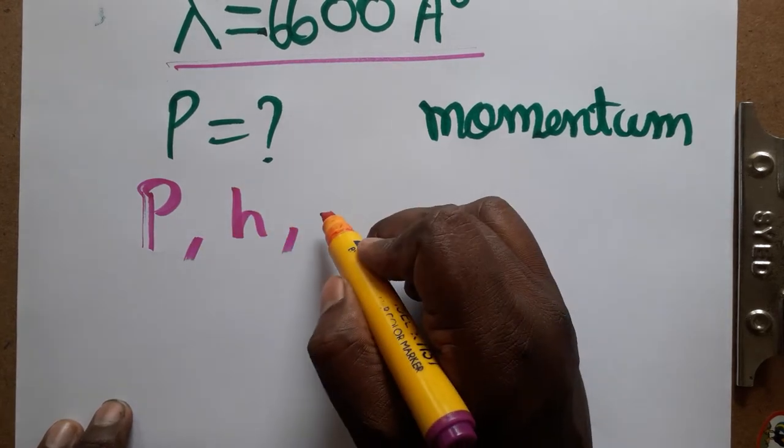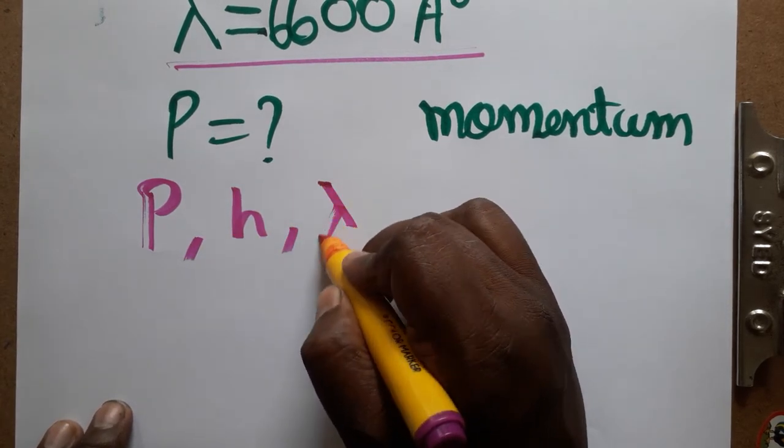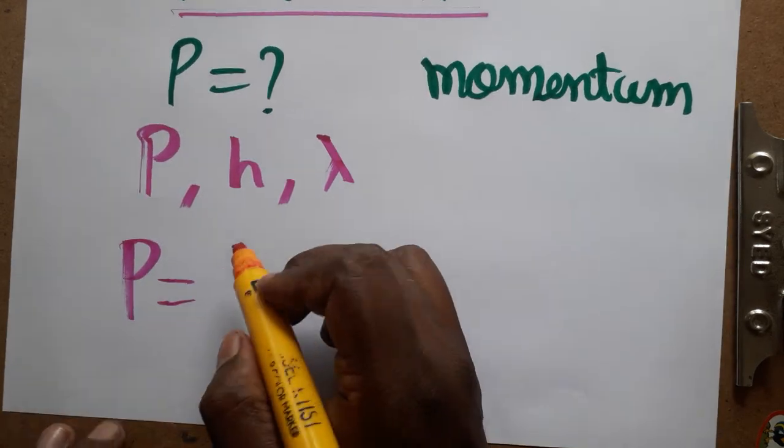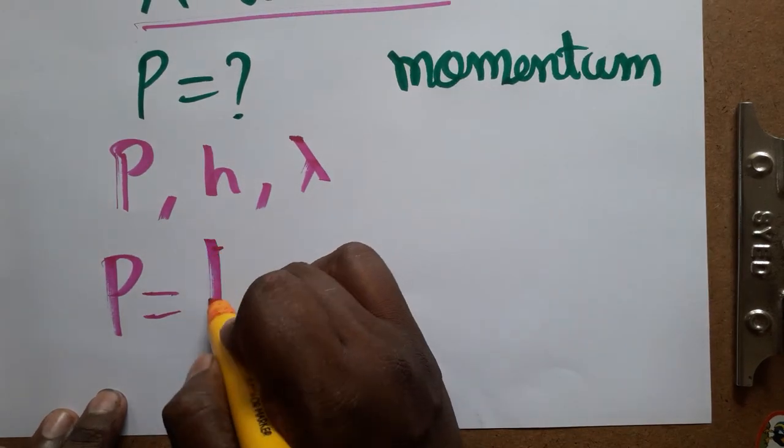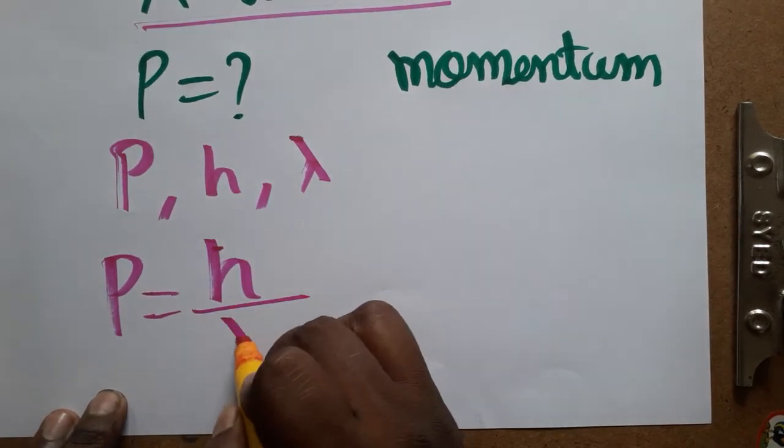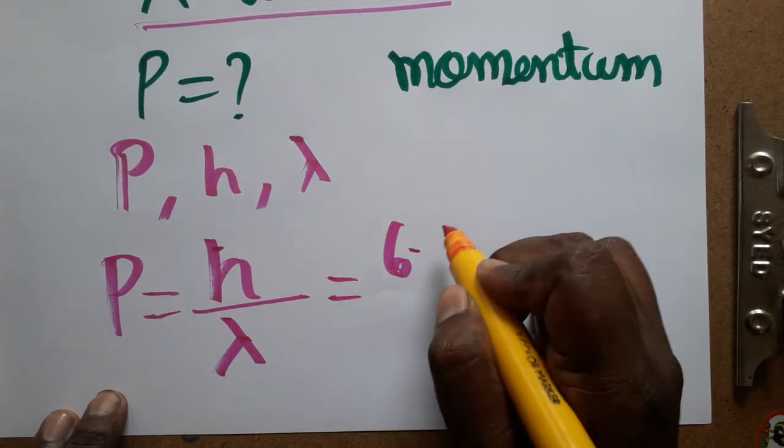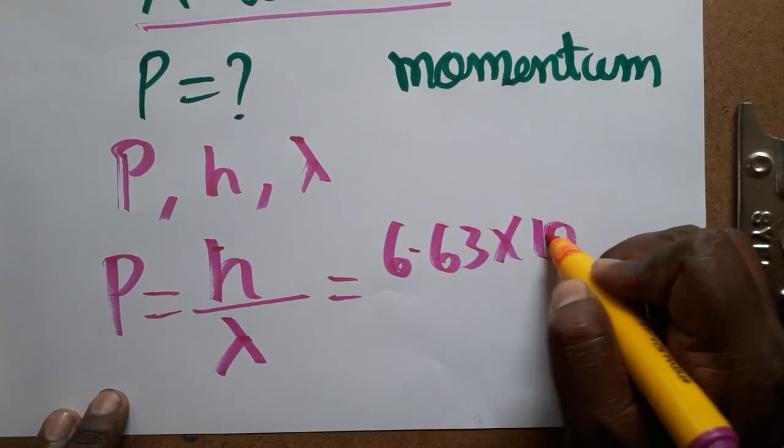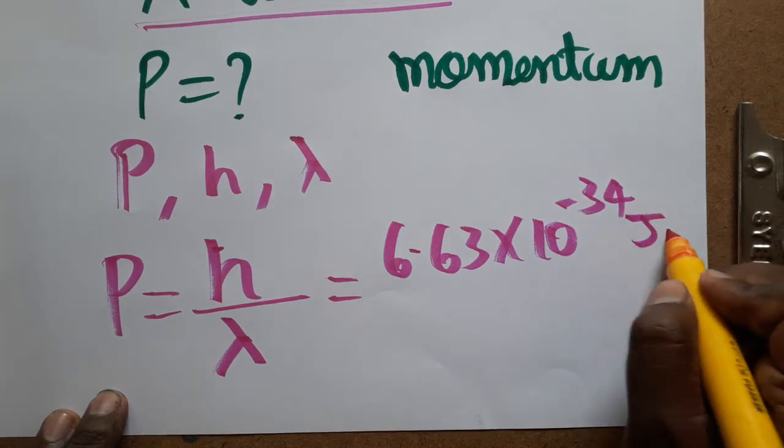We know Planck constant and wavelength. Momentum is equal to Planck constant divided by wavelength. Planck constant is 6.63 into 10 power minus 34 joule second.